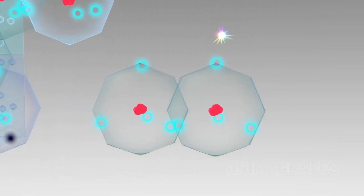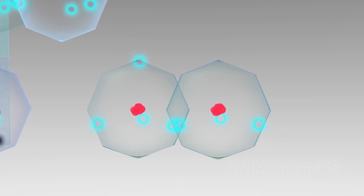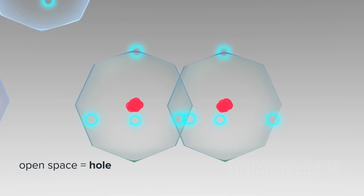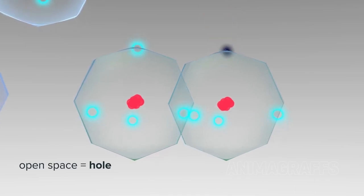When an electron leaves an open spot, other electrons naturally fill it in sequence. For our purposes, it's convenient to track the open space, or hole, as it moves.